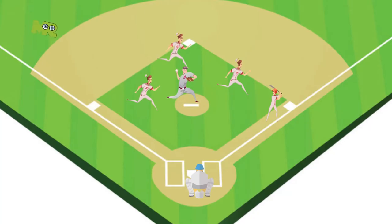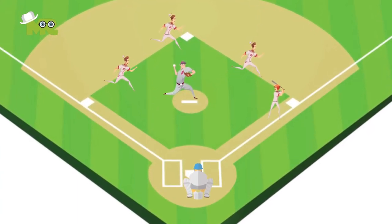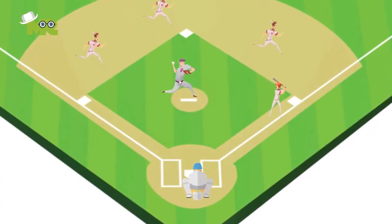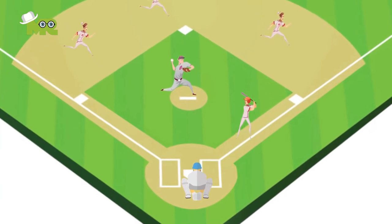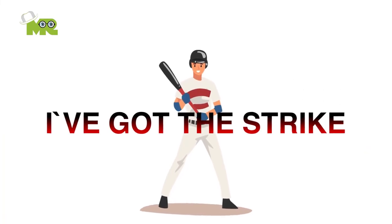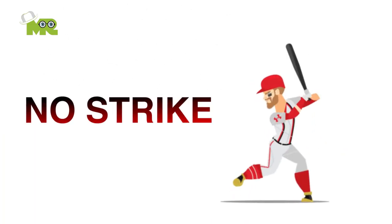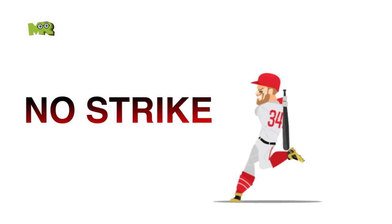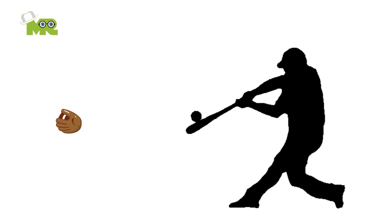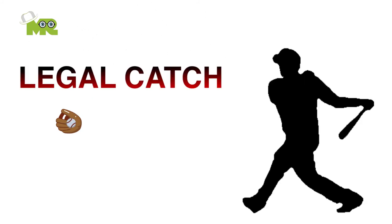In case of a foul ball: 1. the ball is considered dead and all runners are required to return to their base without the liability to be put out, while the batter also returns to the home plate to continue his at-bat. 2. A strike is issued for the batter if he has fewer than two strikes. 3. No strike is issued if the batter has two strikes against him when he hits the foul ball. A foul tip is when a batted ball goes directly from the bat to the catcher's hands as a legal catch.